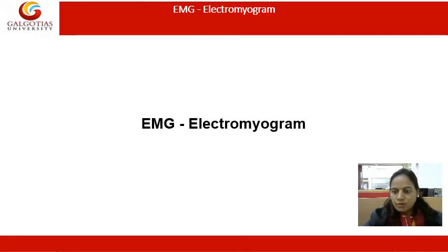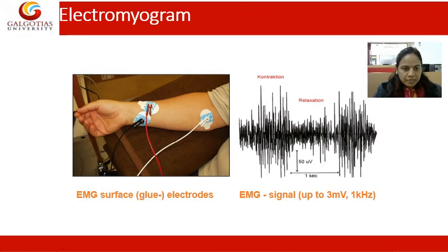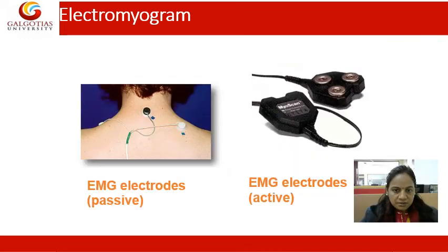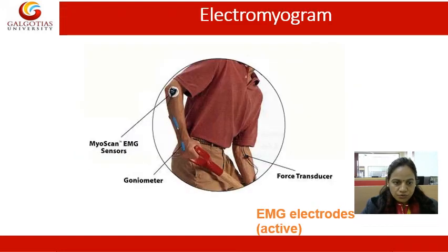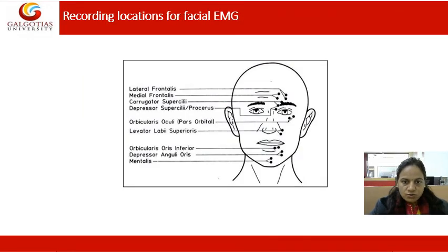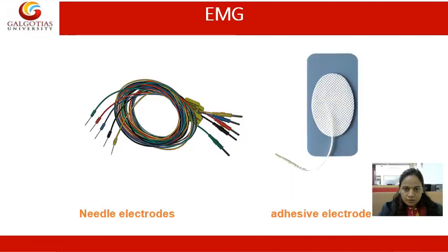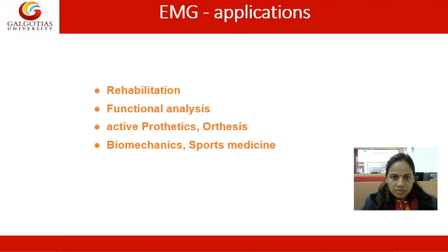Another kind of biosignal is EMG. The impulse of electrodes and the electromyogram can be taken diagrammatically. The signals are captured and the outcome can be seen here. EMG can be recorded through different passive and active electrodes. These are the various electromyograms with recording locations on facial EMG. Needle electrodes and adhesive electrodes can be used for recording.